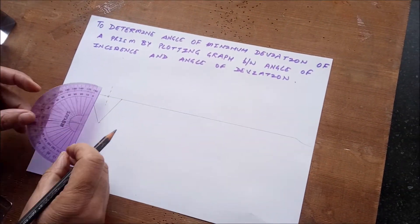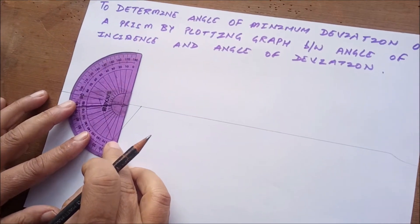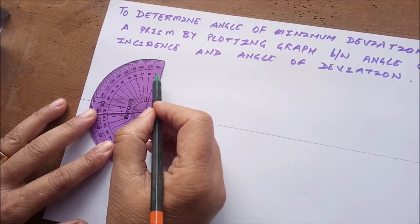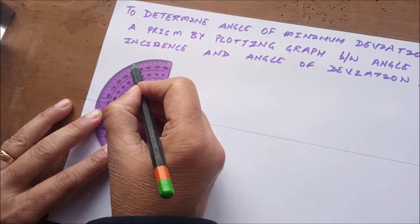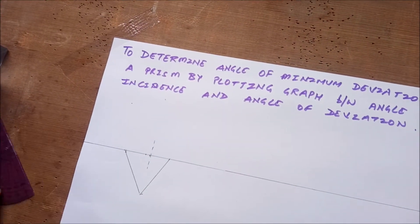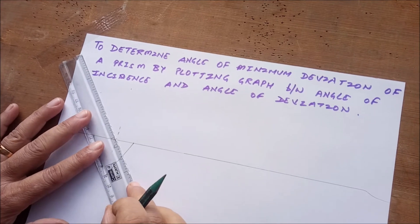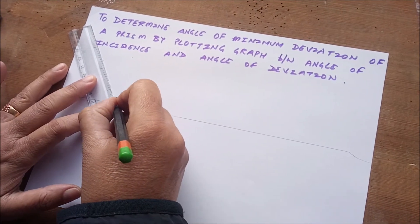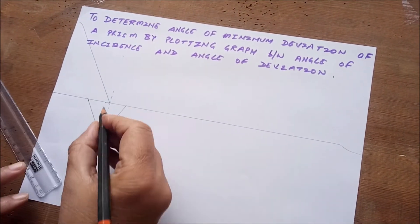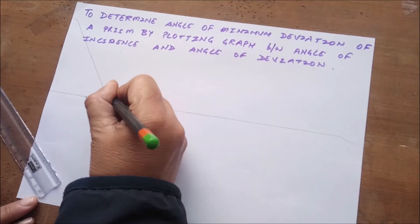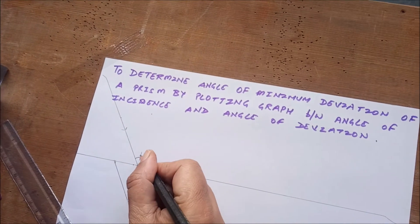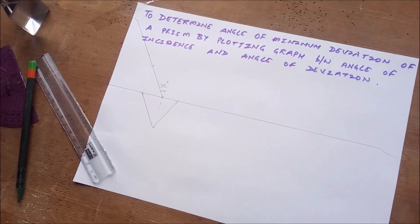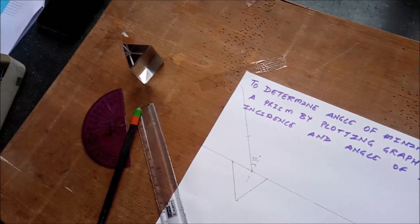Now watch carefully how I keep the protector — the zero should coincide with the normal line. I will take the angle of incidence to be 35 degrees: 0, 10, 20, 30, and 35. This marks the angle of incidence, and I join these two points. The angle of incidence is the angle between the incident ray and the normal, so this angle is 35 degrees.